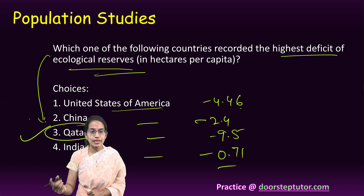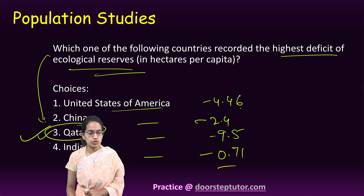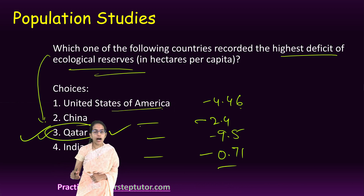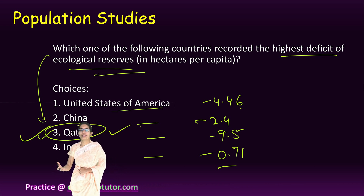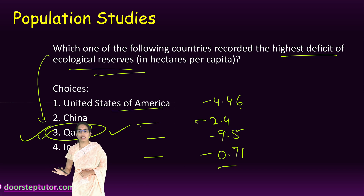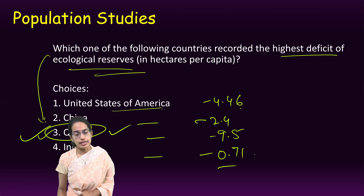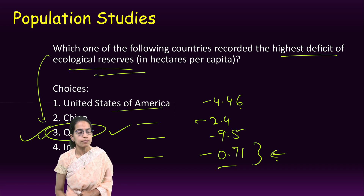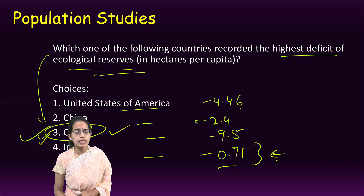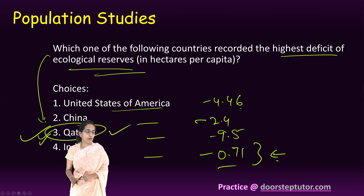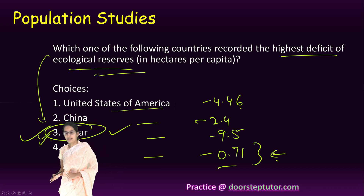Deficit in ecological reserves is an important indicator of environmental development, the pace of urbanization, and how well forest and ecological reserves are protected. India performs far better than the other countries listed. So the correct answer is Qatar.